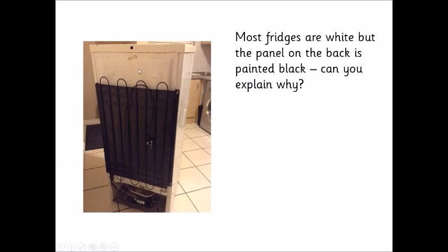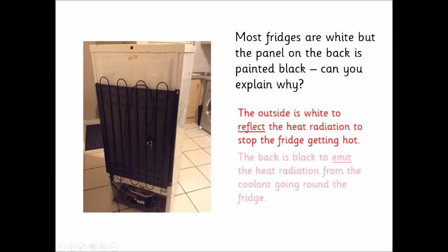But then inside the fridge you've got to have some coolant, because some of the heat does get in. So you have some coolant, the coolant goes round these pipes at the back, and what you're trying to do is get rid of the heat away from the coolant. So you paint this black because black is the best emitter. So this is white because it reflects the heat radiation in the main part of the fridge, but black on the back because the black is emitting the heat radiation out of the coolant.